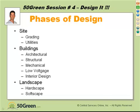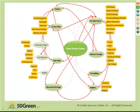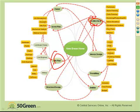We talked about phases of design last time, and the circle of planning. We are really going to key here on the architectural part. I showed you this mind map, which I think is a good way to think about design and how things interact. You may be working on the architectural and then come back and look at your site plan, realizing the architectural has to be tweaked to take advantage of specific site characteristics.